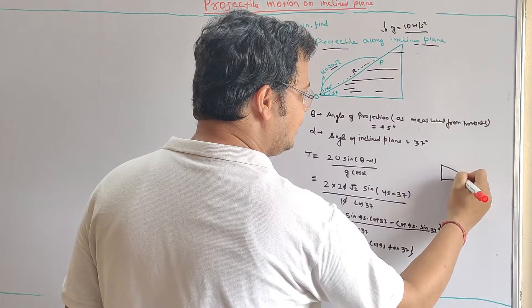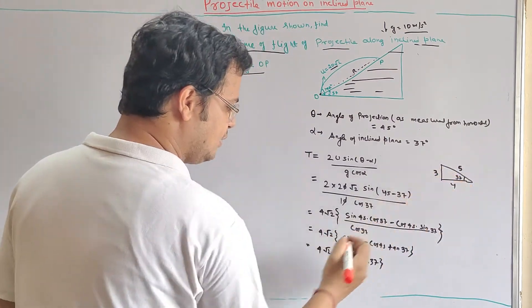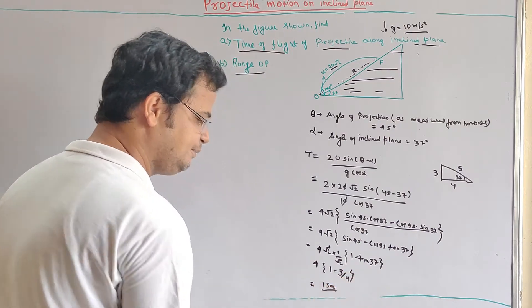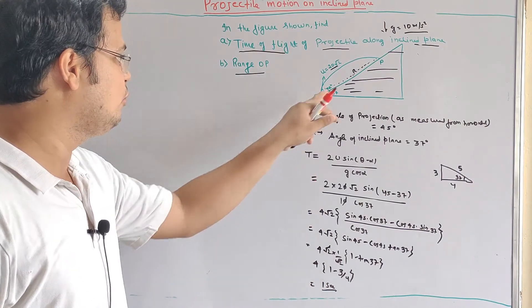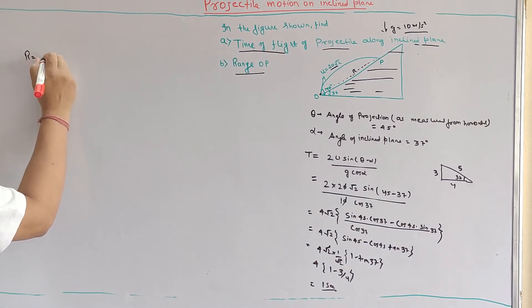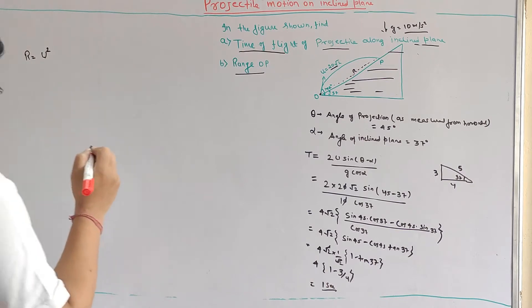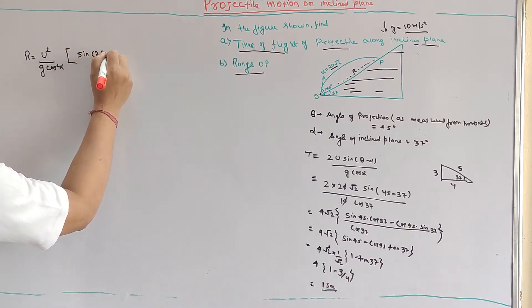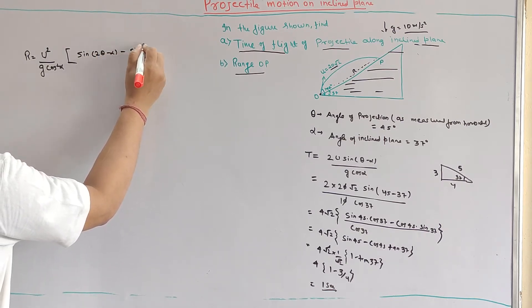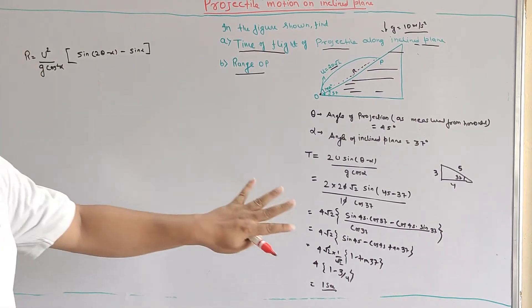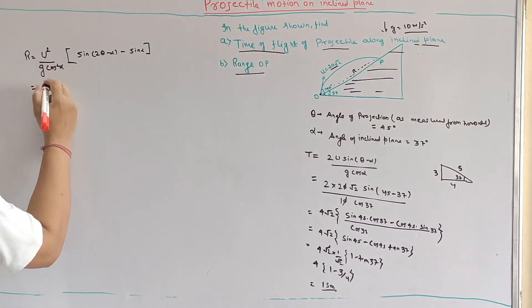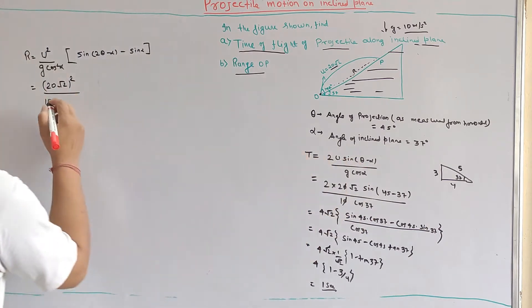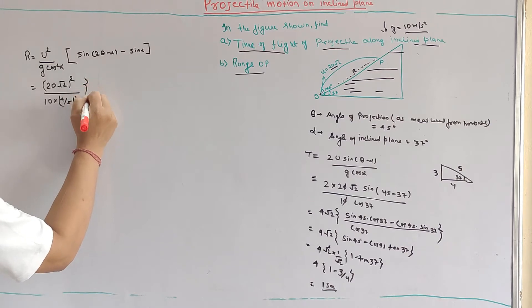Now let's calculate the range. The formula for range R is: R is equal to u squared divided by g cos squared alpha, multiplied by the quantity [sin(2 theta minus alpha) minus sin alpha]. This is the formula for range that we derived earlier. Now we substitute the values: u is 20 root 2, so u squared is 800; g is 10; and cos alpha is 4 by 5.